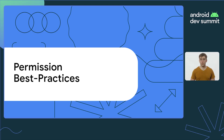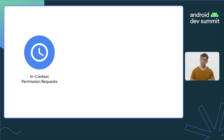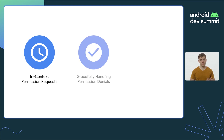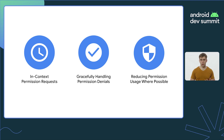In this talk, we'll be going over several best practices for using permissions in your app and giving examples of how Google apps apply them. These best practices help users understand why your app needs their permission, and research has shown that users who understand an app's permission requests are significantly more likely to grant that request. Reducing the denial rate by using best practices isn't just user-friendly — it sets your app above those that don't. The three best practices are: choosing the right context to show permission requests, gracefully handling permission denials, and reducing permission usage where possible.